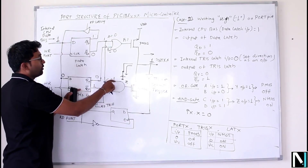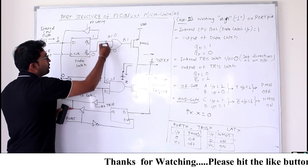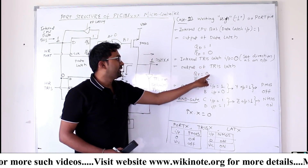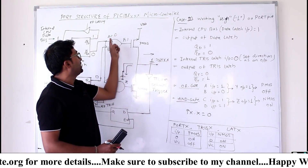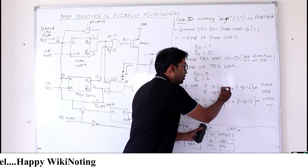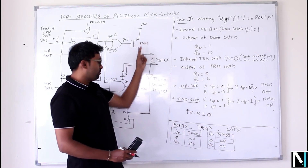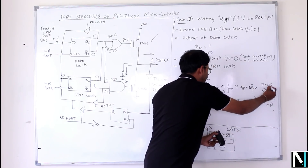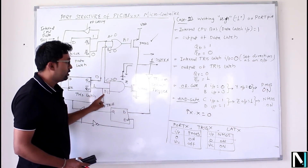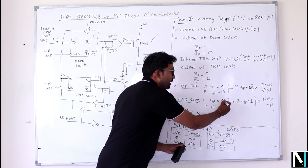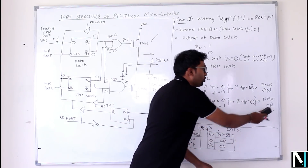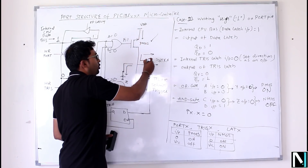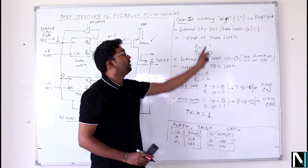With QT-bar = 1, input B to the OR gate is 0 (from QT = 0). So OR gate inputs are A = 0 and B = 0, giving Y = 0. Since Y = 0 at the gate of PMOS, PMOS turns ON. For the AND gate: C = 0 (QD-bar) and D = 1 (QT-bar), so Z = 0 and NMOS is OFF.